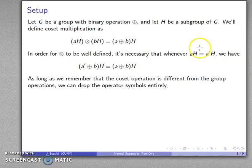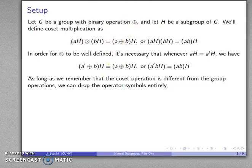Now as long as we remember that coset operation is different from the group operation, we actually don't need these operator symbols. We can just drop them out, so instead of aH coset times bH equals a group plus b H, I can just write aH bH equals abH and a'H b'H and so on. But it's important to remember that this is a group operation, this is the coset operation, and they are different.